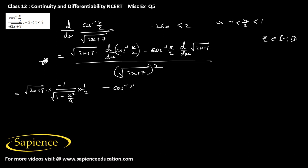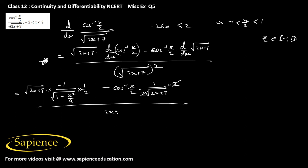Then minus cos inverse of (x/2) into d/dx of square root of (2x+7), which is 1 over 2 times square root of (2x+7), into d/dx of (2x+7) which is 2. So the 2 and 2 will cancel out. That is all divided by (2x+7).